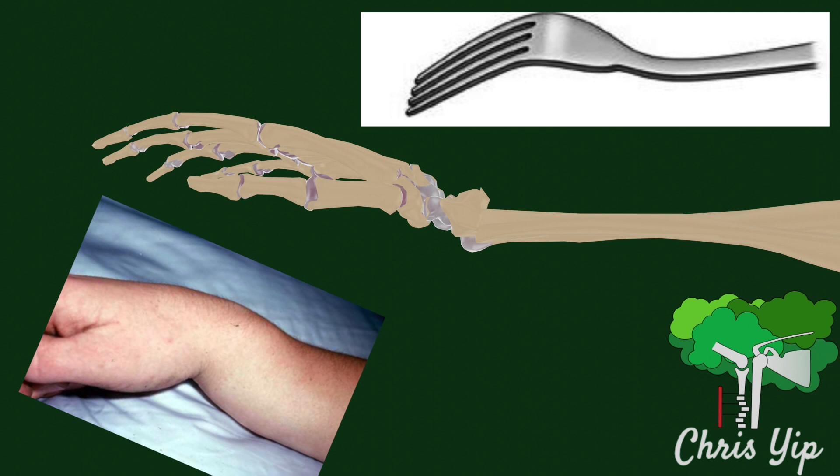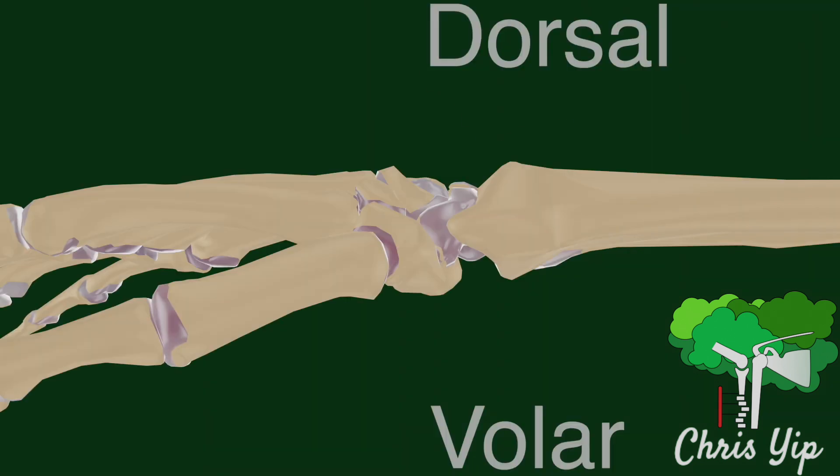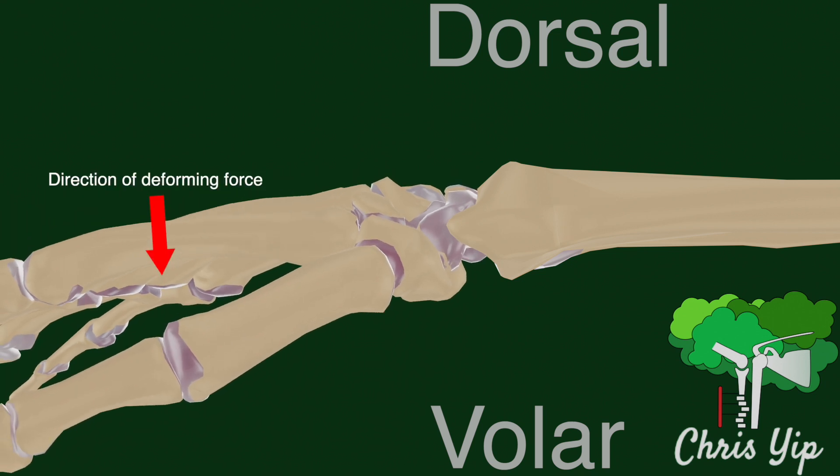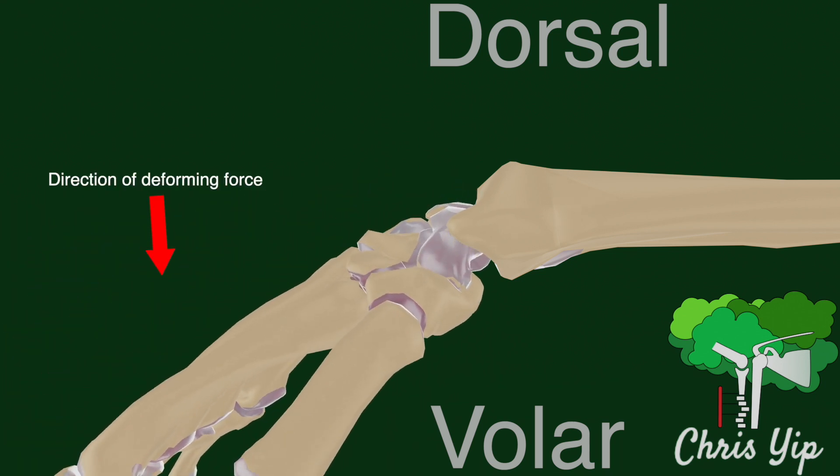This deformity gives rise to a silver fork appearance on x-rays. Smith fractures are due to forces applied onto the dorsal surface of the hands and wrists.